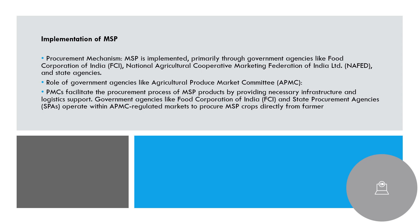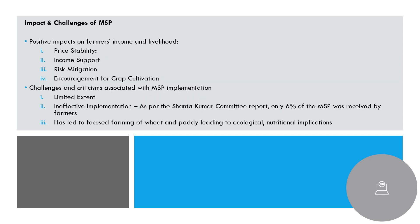For implementation, various agencies are involved. The Food Corporation of India is where the government stores the procured goods. APMCs play a primary role in implementation, though APMCs are a different topic altogether. You should just know that APMCs play a key role in MSP procurement.